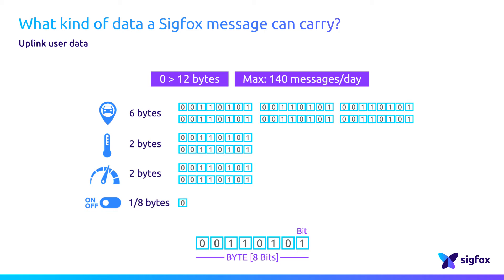Note that objects don't have to send 12 bytes — it's just a maximum. An object can, for example, report only one speed radar value using one byte. But it can also send messages of zero bytes of data. Yes, zero bytes! In that case, the message itself is the communication — like a heartbeat to say that everything is okay and the object is in working condition.